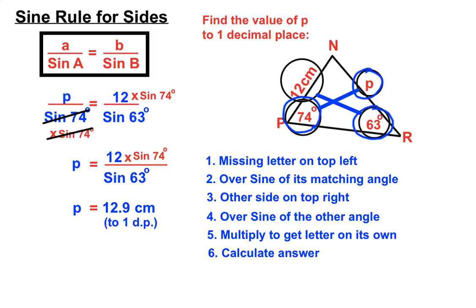There are a lot of steps there, but we're really just taking our Sine Rule, putting the missing letter on the top left, and then substituting the right things in the right places from our triangle.